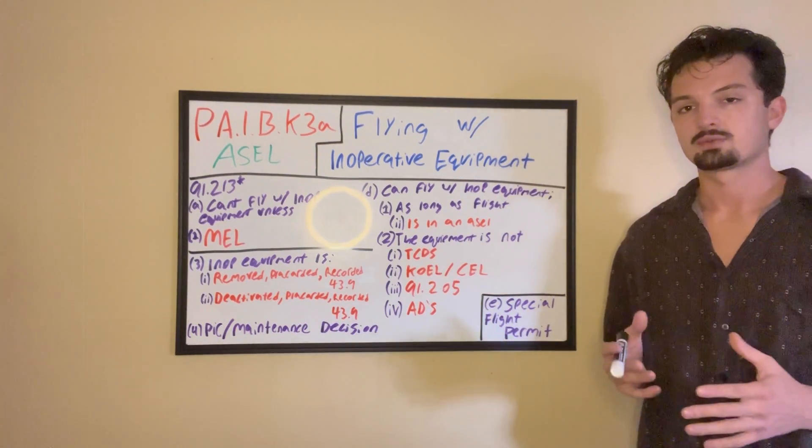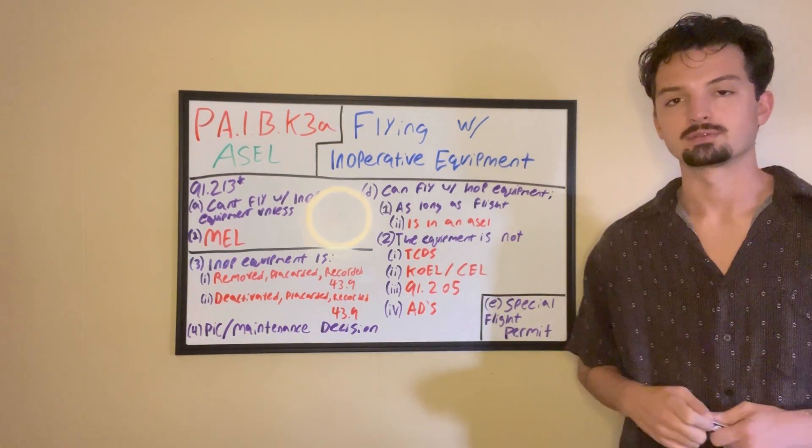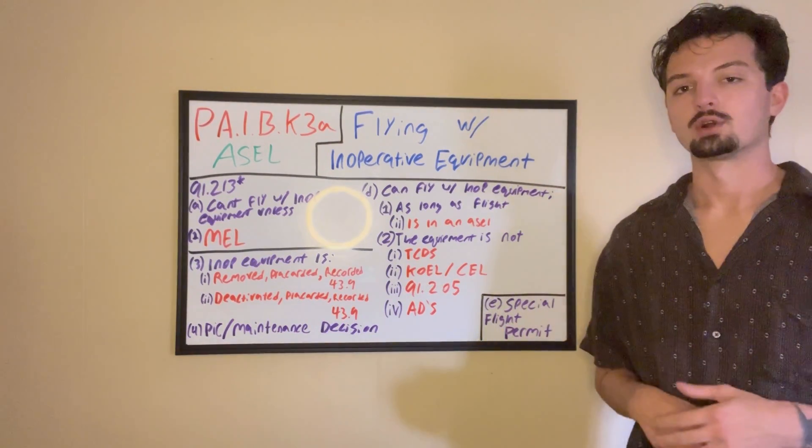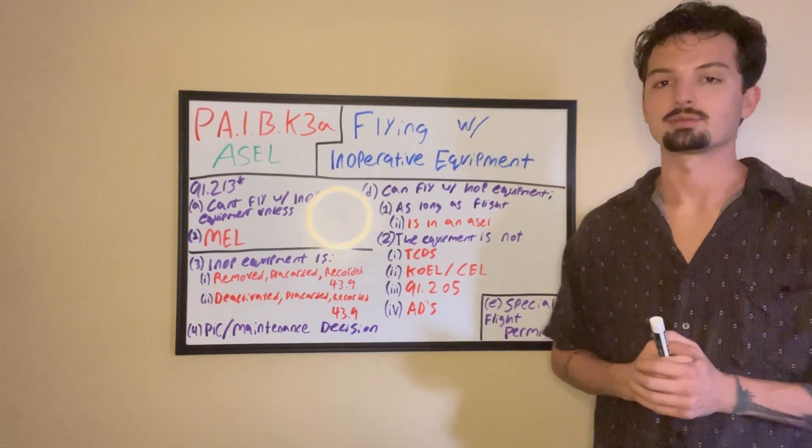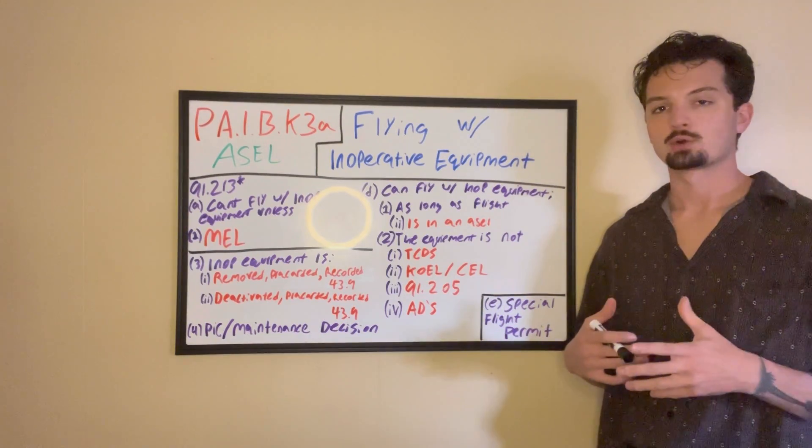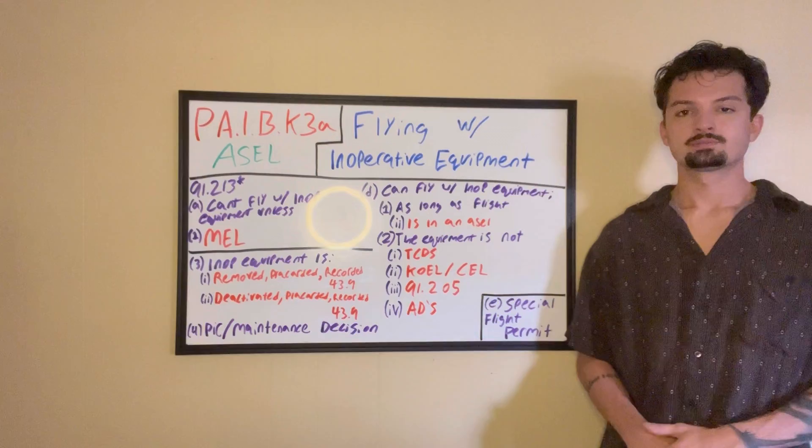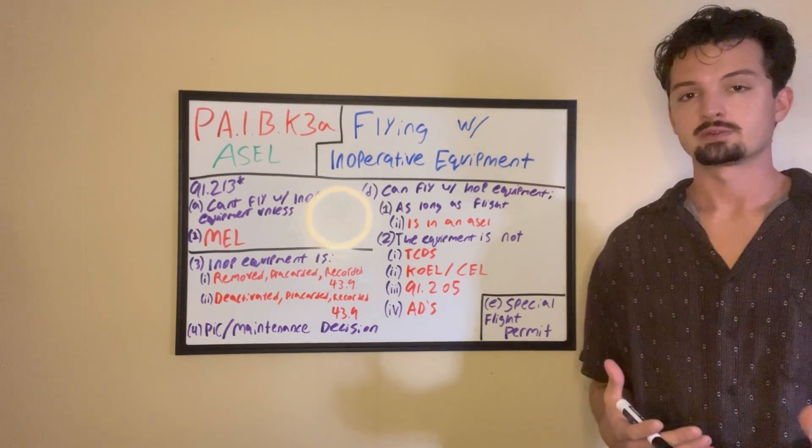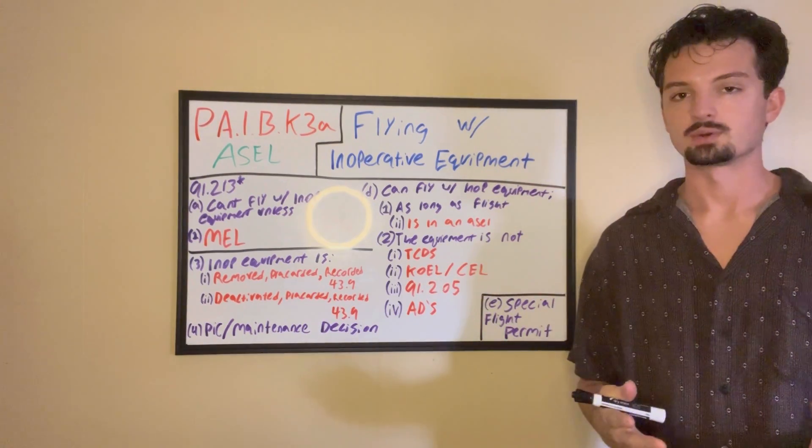And if you don't know about 91-205, check out the last video. But 91-205 is a regulation that states our required equipment for day and night VFR flight and instrument flight. If the piece of equipment, missing or broken, is required by 91-205, then you cannot fly. And last but not least, you can fly with inop equipment if that inop equipment is not required by airworthiness directives as well. If your plane has an airworthiness directive that requires a specific piece of equipment, even if it's not in any of these lists or the regulations, you still need it to be airworthy.